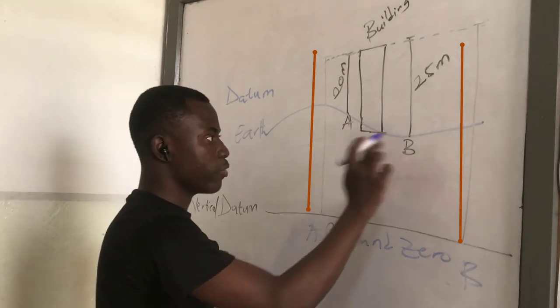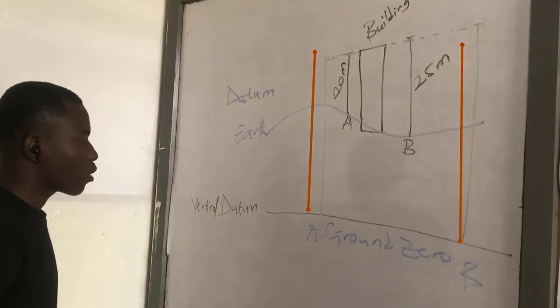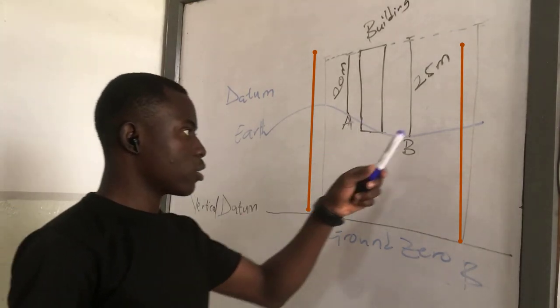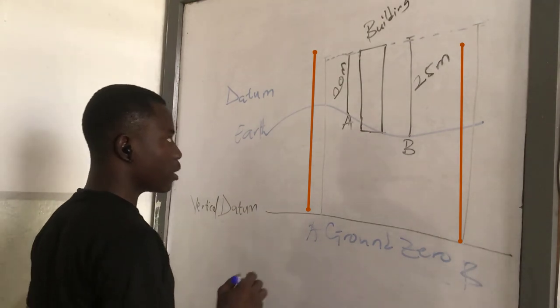Unlike in the first scenario where they both started from different heights or different planes. So that's the idea behind datum. The reason is mostly the earth is not flat.